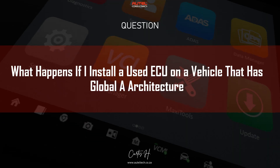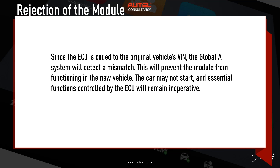The client asked: what happens if I install a used module on a vehicle with Global A architecture? Two things can happen. First is rejection of the module — since the ECU is coded to the original vehicle VIN, the Global A system will detect a mismatch, preventing the module from functioning. The car may not start and essential functions will remain inoperative. This is due to the unique environment identifier stored in the ECU, which is tied to the original vehicle's VIN and security settings.